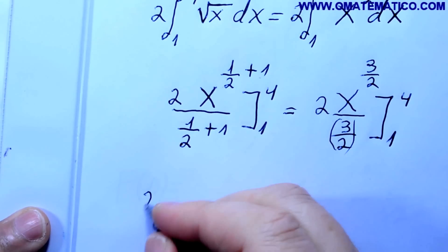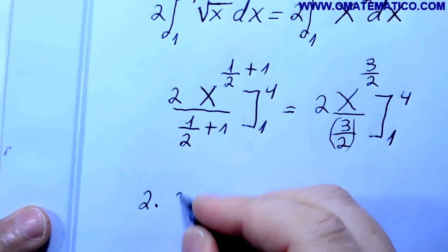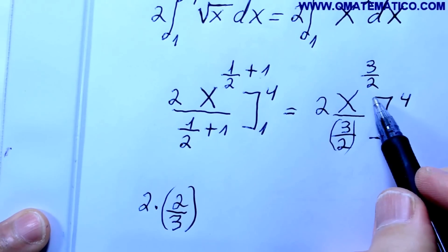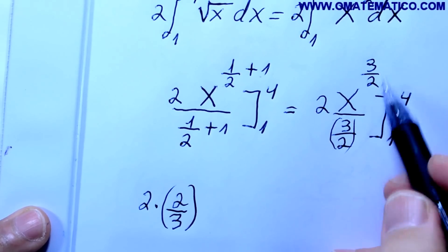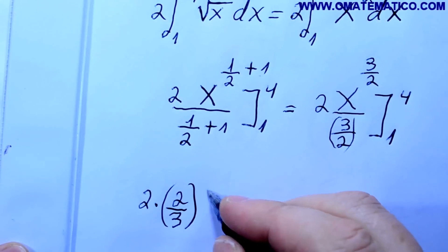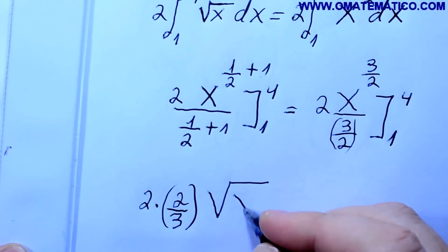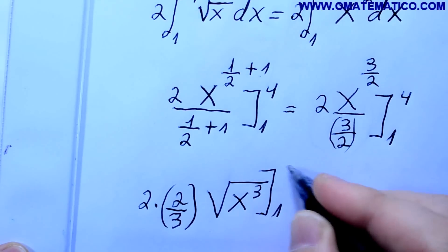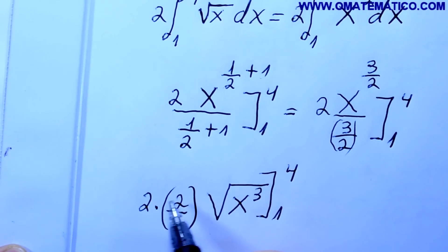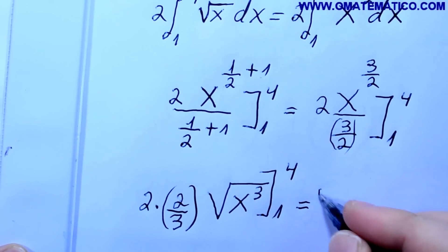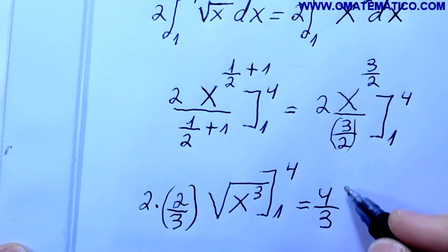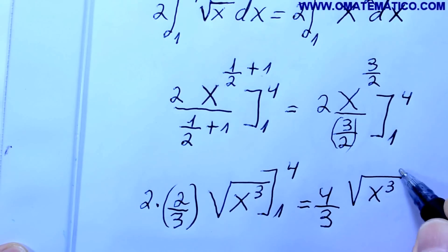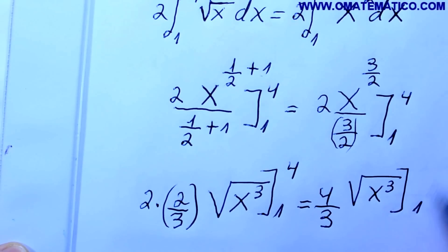A potência em forma de fração pode ser escrita como raiz de x na terceira, de 1 a 4. 2 vezes 2 é 4 terços, raiz de x na 3, de 1 a 4. Agora, a gente substitui primeiro o 4.